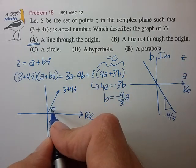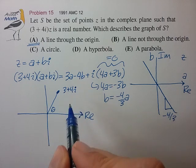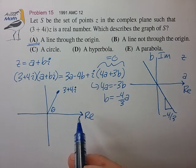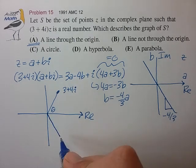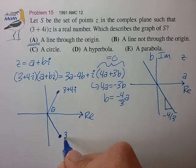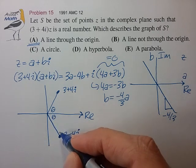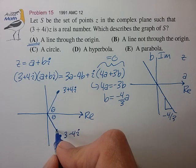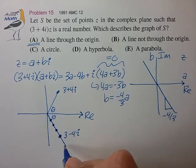And try to imagine what number might we multiply by 3 plus 4i to get to the positive real axis. We realize that one way to get to the positive real axis is just multiply by the complex conjugate. And then we might realize that any number with the same theta would again lead us to the positive real axis.